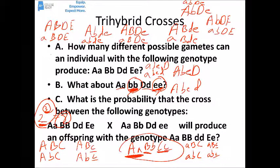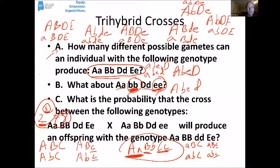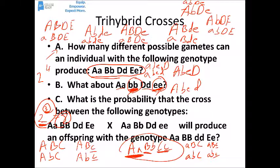So actually up here on part A, we should have had two to the fourth — because there are four heterozygous pairs. And what's 2 to the fourth? 16. So the answer for part A should have been 16. We just missed a couple in real time when listing combinations manually.